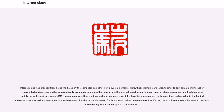Internet slang has crossed from being mediated by the computer into other non-physical domains — any domain of interaction where interlocutors need not be geographically proximate to one another, and where the Internet is not primarily used. Internet slang is now prevalent in telephony, mainly through SMS communication. Abbreviations and interjections especially have been popularized in this medium, perhaps due to the limited character space for writing messages on mobile phones. Another possible reason for this spread is the convenience of transferring existing mappings between expression and meaning into a similar space of interaction.